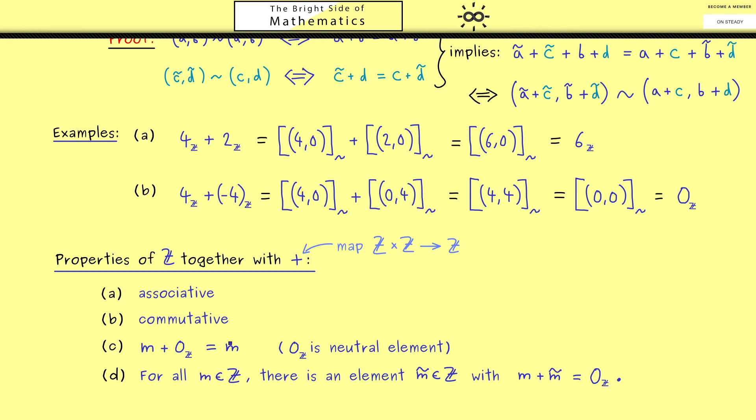Now these four rules are so important that the whole thing gets its own name. So we say ℤ together with the addition is a so-called abelian group. In other words, in an abelian group we have all these nice calculation rules.